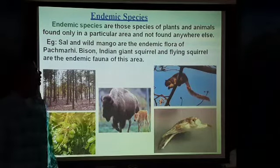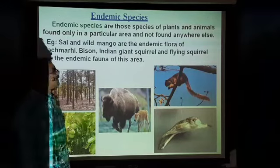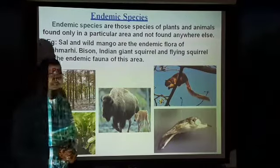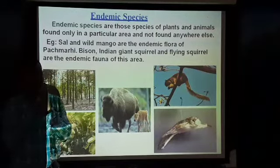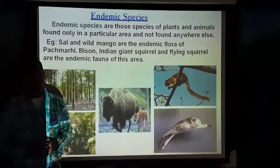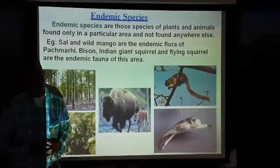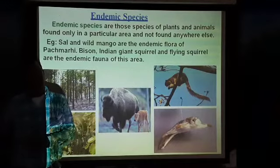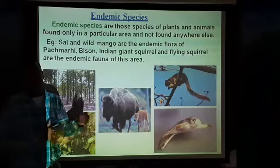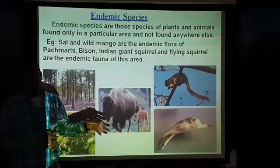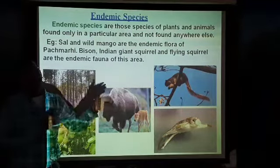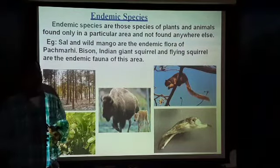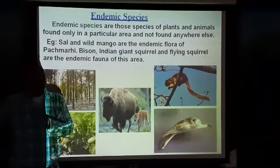What do you mean by endemic species? Endemic species are those species of plants and animals found only in a particular area and not found anywhere else. For example, the polar bear is an animal we can see only in the Himalayan places — it can only live in that particular area. Similarly, penguins can be seen on the seashore but not anywhere else. Such animals are called endemic animals. Even the blue whale can only be seen in seas and oceans, not in rivers, ponds, or lakes.